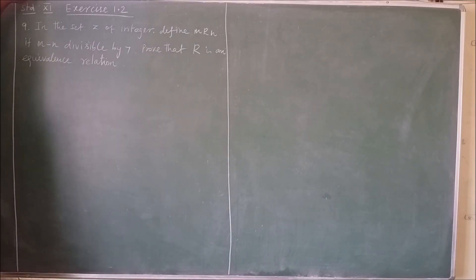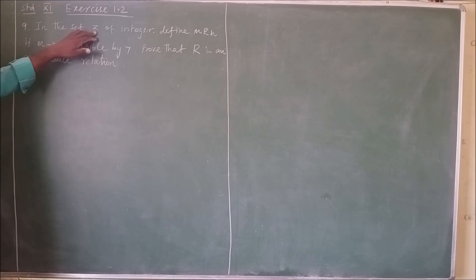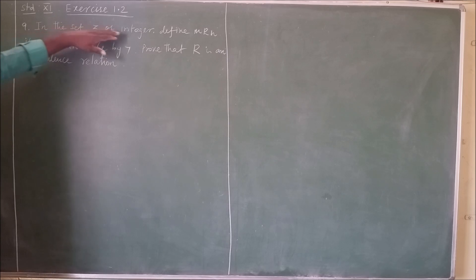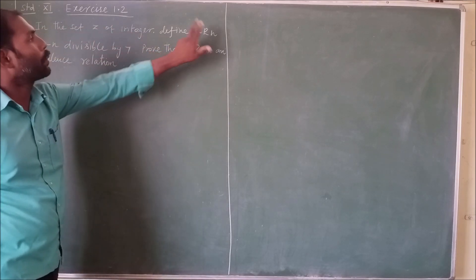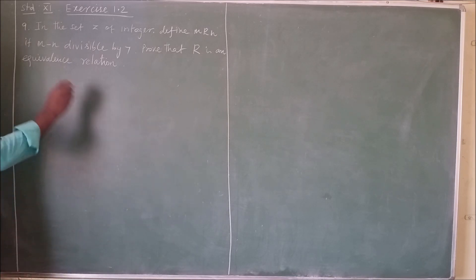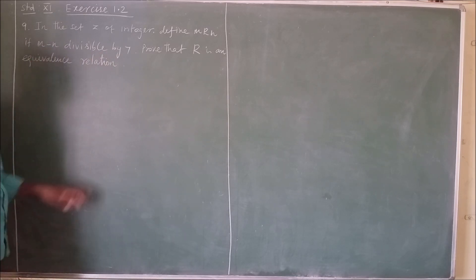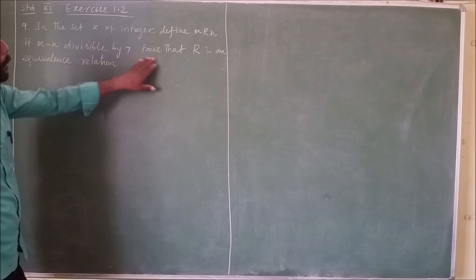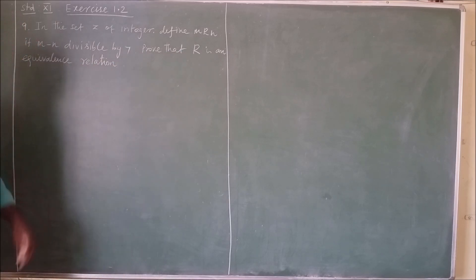Hello, welcome to standard 12. Problem number 9. In the set of integers Z, define m related to n if m minus n is divisible by 7, and show that R is an equivalence relation.